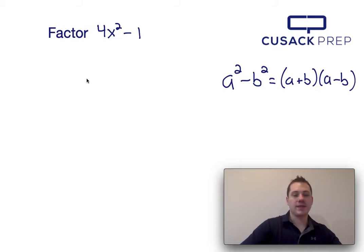So if a squared is our first term and b squared is our second term, that means that a would be the square root of 4x squared which is 2x, and b would be the square root of 1 which is 1.